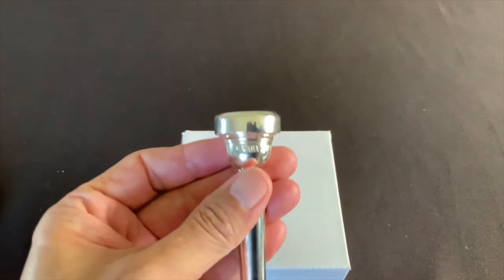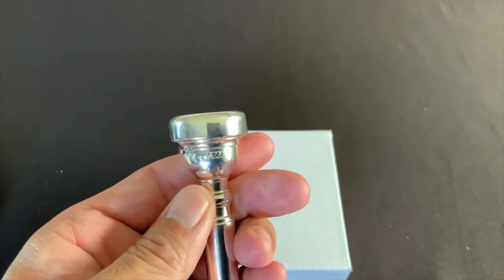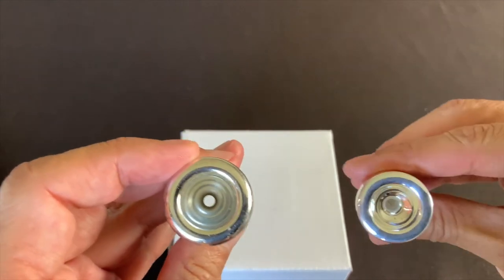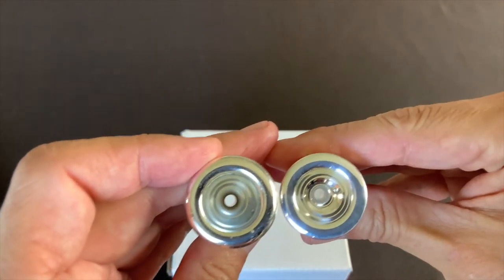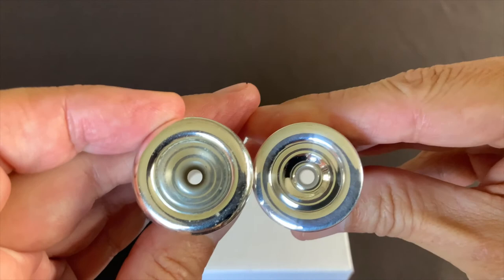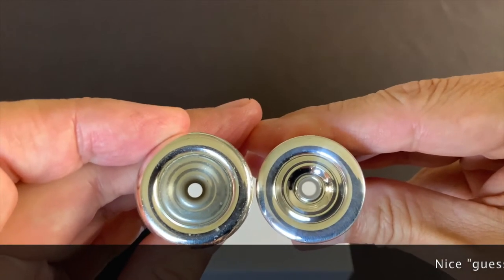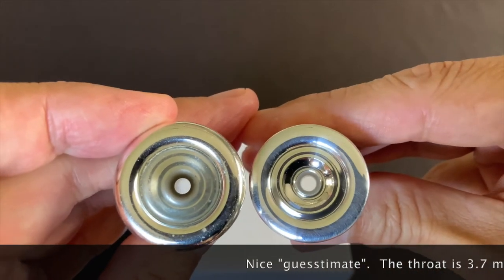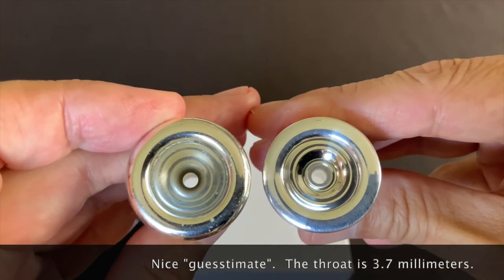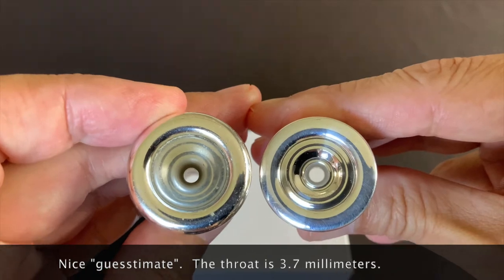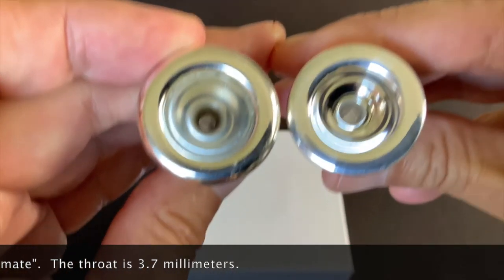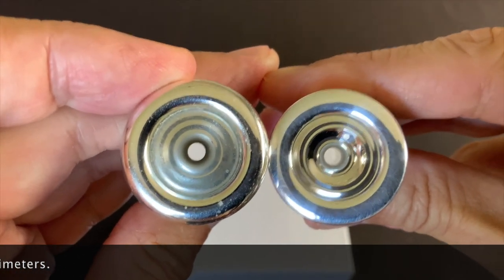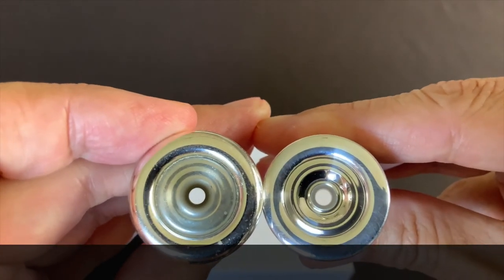So this is the Bobby Shue Jazz, which had a throat size of 3.65. And let's see how that compares with this Dennis Wick 4E. So, wow, that actually is much bigger. So this might be closer to 3.7, I'm saying, thinking. What do you think? Let's see if we can do a contrast. No, let's put it on the white box. That's better.